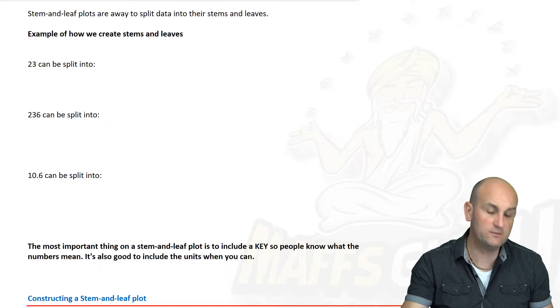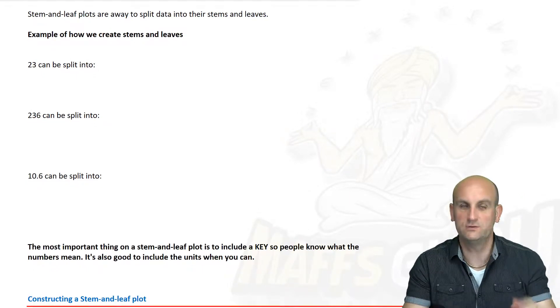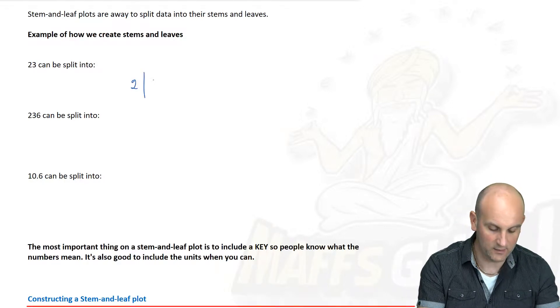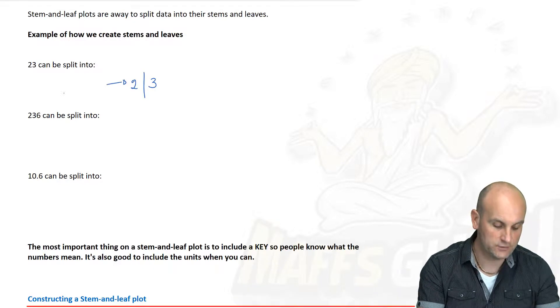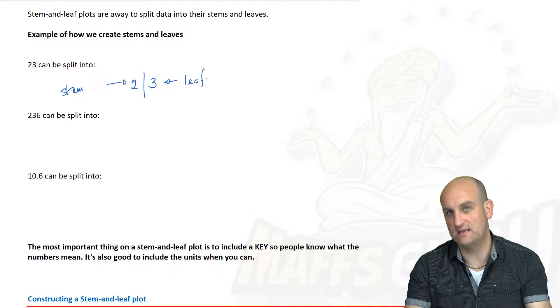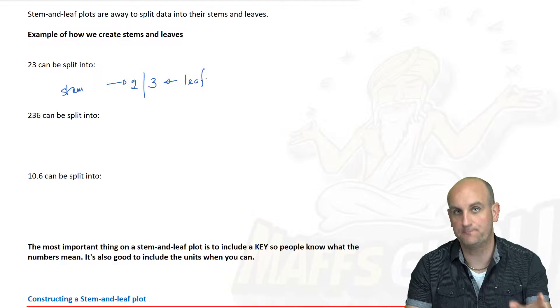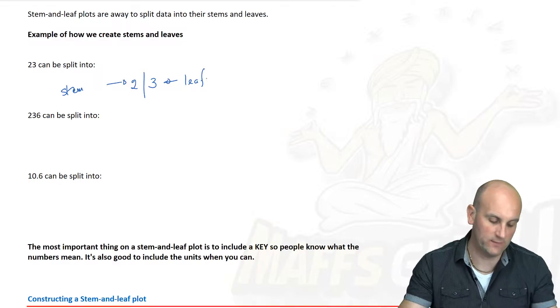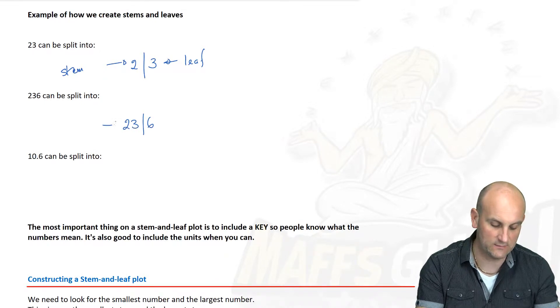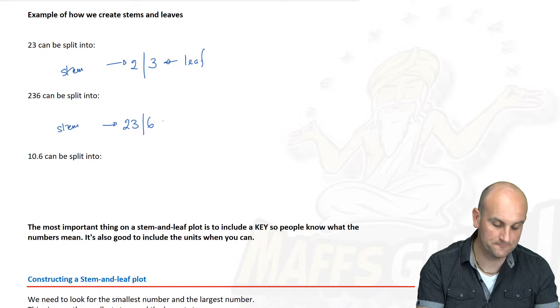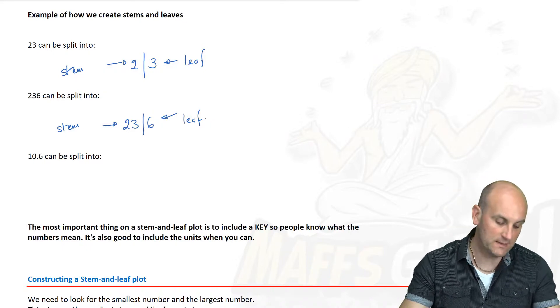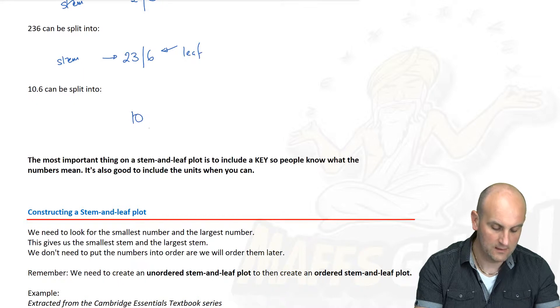First things first, to be able to decide what's a stem and what's a leaf of a number, we have to understand how to split these up. 23 can be split up with 2 and a line and a 3. In this situation, the 2 becomes our Stem and the 3 becomes our leaf. We're only ever permitted to have one leaf. There's only ever one number after the Stem.